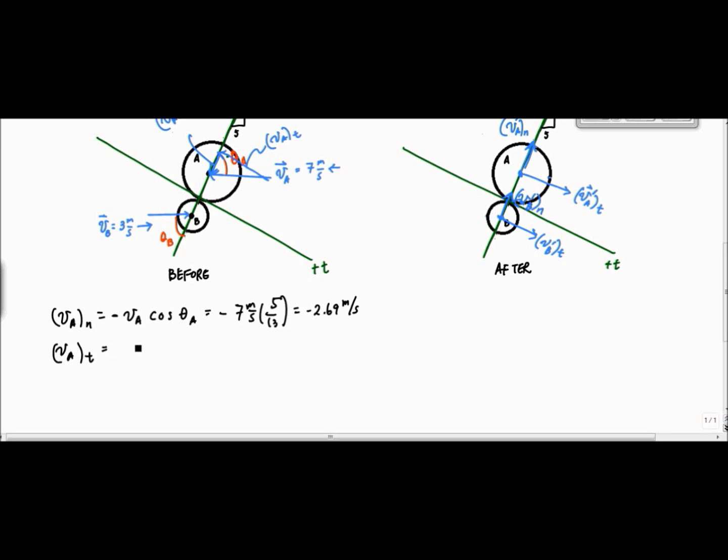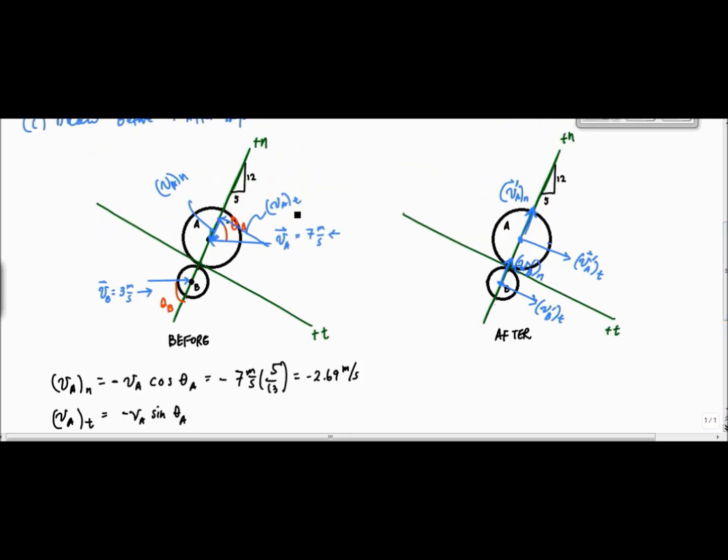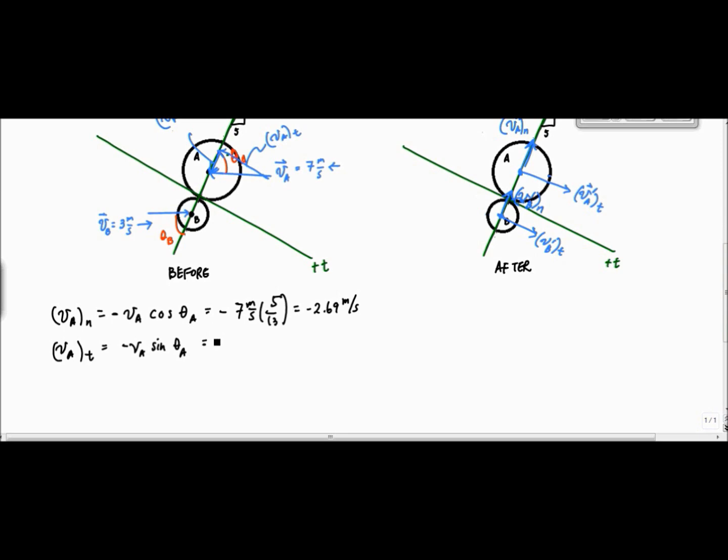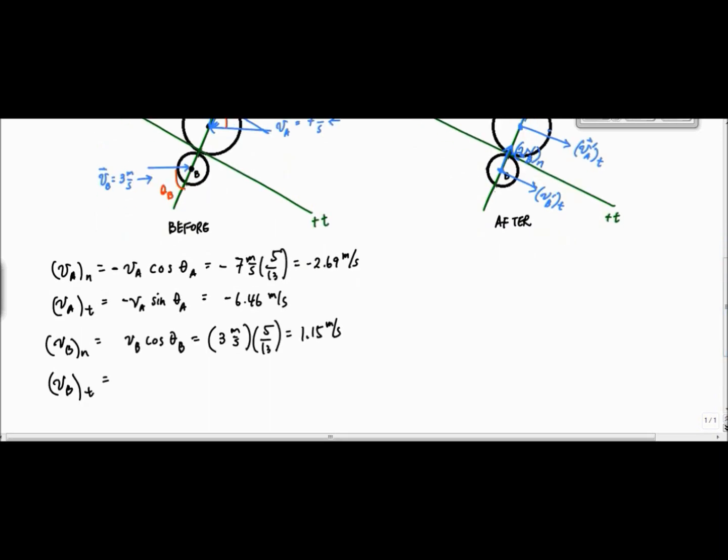And then here, VAT doing the opposite, which will be minus VA sine theta A. Again, negative because my direction of VAT is opposite of the positive T direction. So VAT here, VA sine theta A, is equal to minus 6.46 meters per second. And then VB sub N is VB cosine theta B. This is going to come to 3 meters per second times 5 thirteenths, which is 1.15 meters per second.